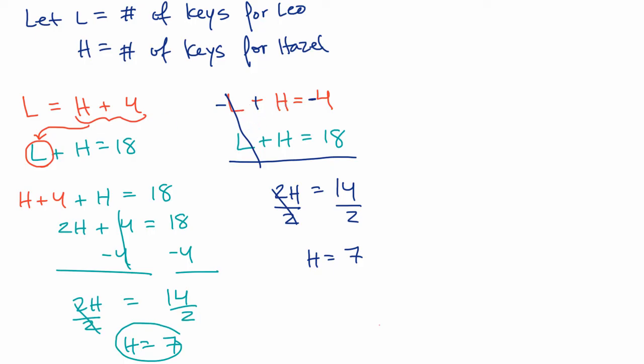You could have easily done it the other way. You could have said L - H = 4 and L + H = 18, then immediately add the two sides. On the left, the H's cancel out. You'd get 2L = 22. Divide both sides by two, and you'd get L = 11. But remember, they don't ask about Leo. They're asking about Hazel. So you'd have to substitute that back in to figure out that H = 7.